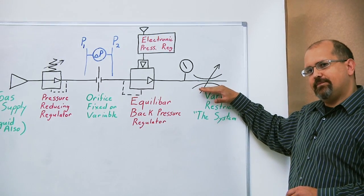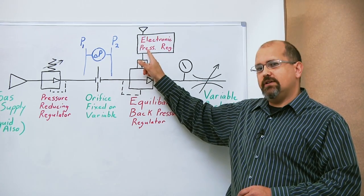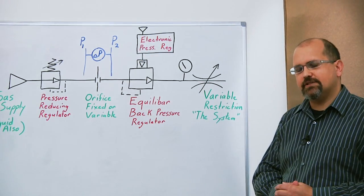So regardless of the downstream pressure and how it varies, P2 remains at setpoint, and that keeps the mass flow through the system constant.